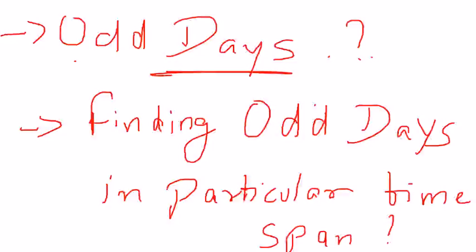As you are done with the concept of finding whether a particular year is a leap year or not — in the previous video we showed that 100, 200, and 1900 are not leap years. If you are not familiar with that concept, you can see the link right now visible on your screen, or you can find the link in the description below.